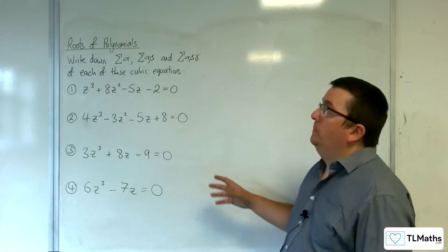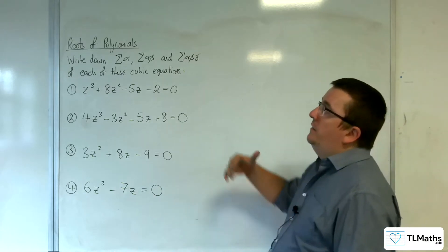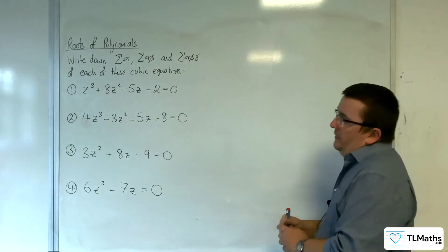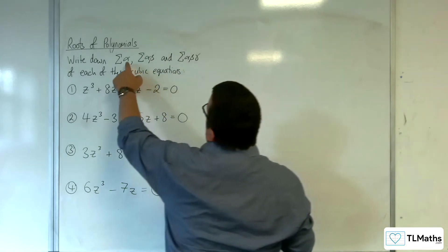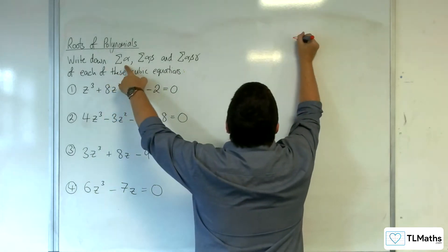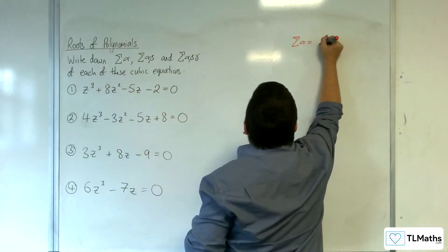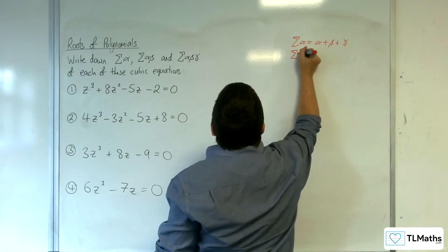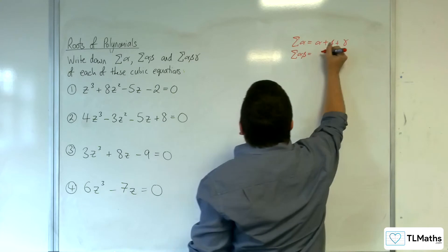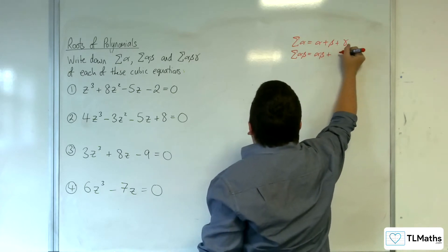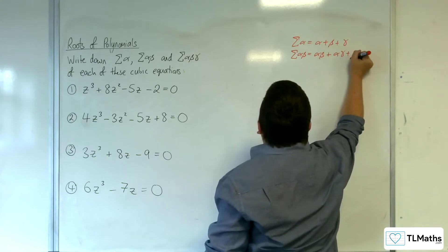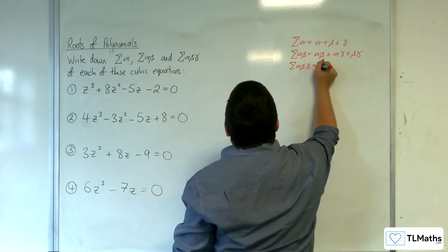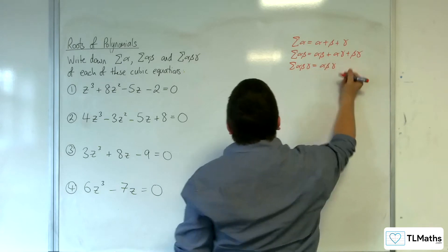Before we start with this video, I need to make sure that you understand this notation I'm utilizing here. This is shorthand notation. The sum of alpha represents alpha plus beta plus gamma — that is the sum of the roots. The sum of alpha beta is the sum of the product pairs: alpha beta plus alpha gamma plus beta gamma. And the sum of alpha beta gamma just means alpha beta gamma, because there's just that one term.